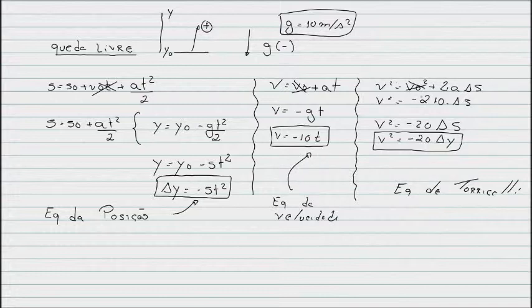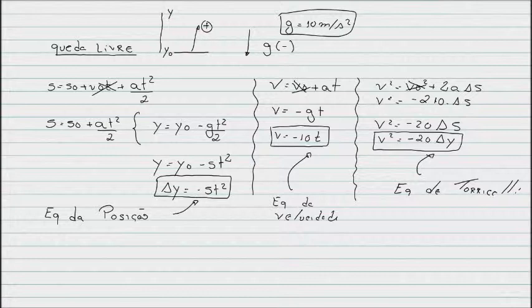And finally, Torricelli's equation, where final velocity squared equals initial velocity squared plus two times acceleration times delta s. This equation is only used when we don't have time provided. Since initial velocity is zero, we eliminate that. Acceleration is negative 10, so we get minus 20 delta s. Remember that delta s we substitute with y because of height. So we get this equation.